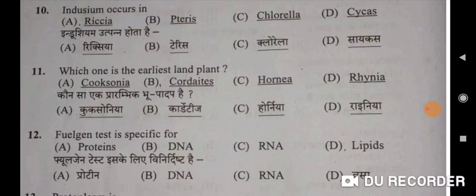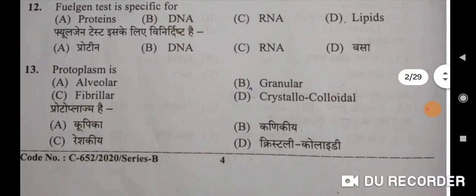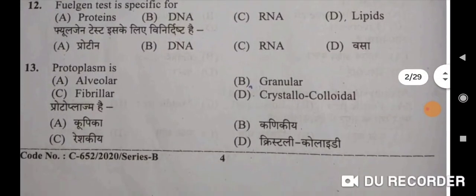Twelfth question: Feulgen test is specific for DNA — B will be the correct option. Feulgen test kisliye vini drisht hai — DNA ki liye. Thirteenth question: protoplasm is a crystal-colloidal system — D will be the correct option. Protoplasm hai ek crystallicolloid.